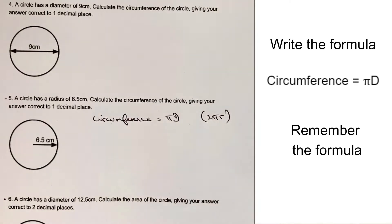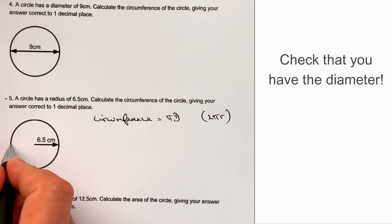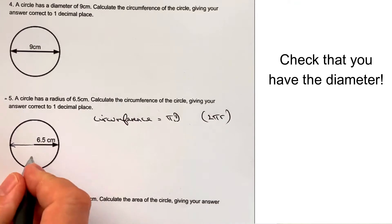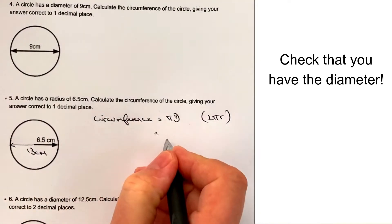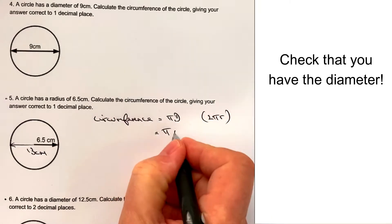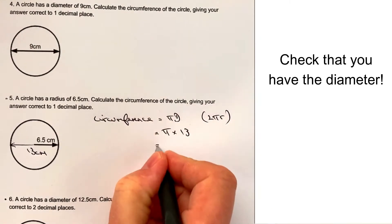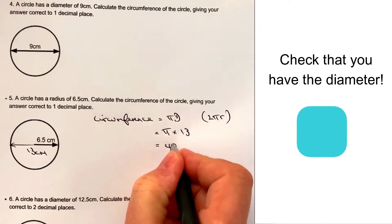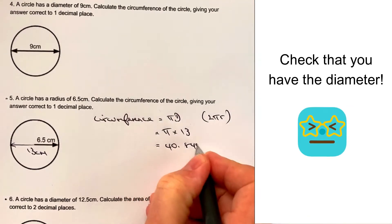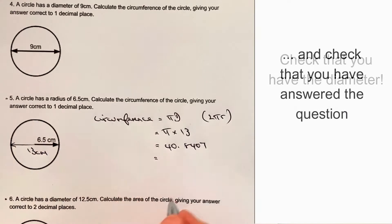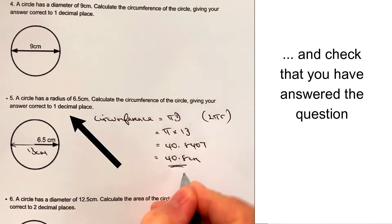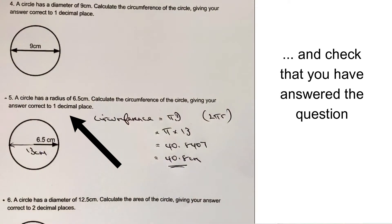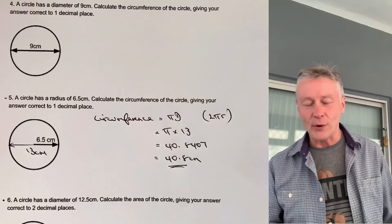In this particular question, we've been given the radius. So if I make that into the diameter, that's going to be 13 centimetres. So if I want to work out the circumference, it's going to be pi multiplied by 13. If I put that into my calculator, I'm going to get 40.8407. And if I round that to one decimal place, that's going to give me 40.8 centimetres. And that would be the answer to that particular question.